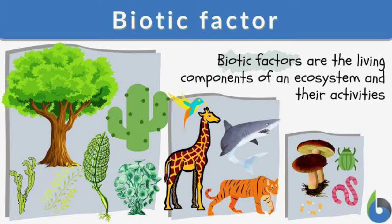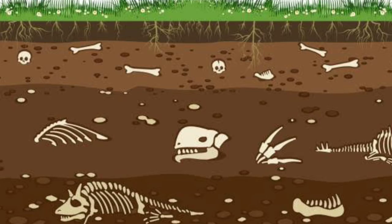Primary consumers consume organic food. When plants or animals are dead, the decomposers decompose them. When the decomposers are decomposed, they are called saprophones.